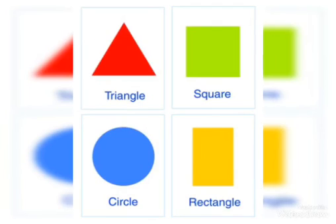This is a circle. It is round in shape. They do not have any edges or corners. These are the four basic shapes.